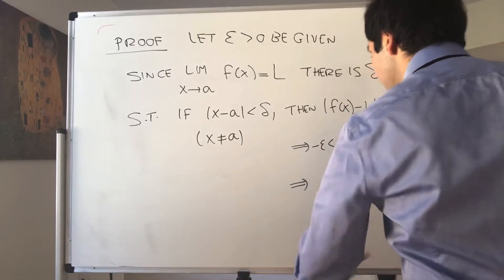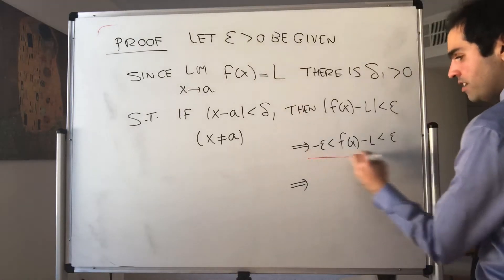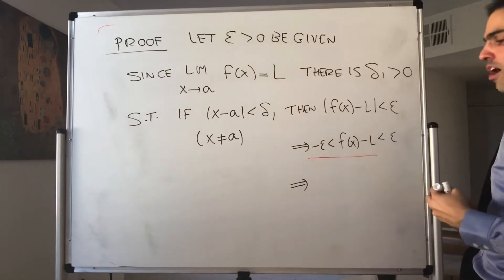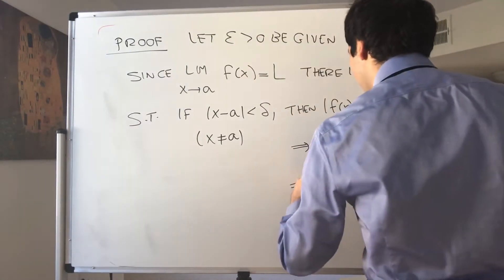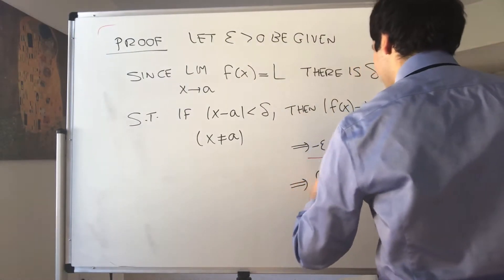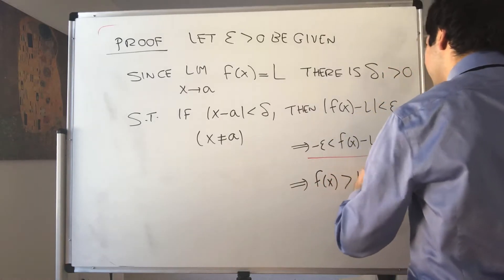And just focusing on one part, because f is the smaller function, we get f of x is bigger than l minus epsilon.